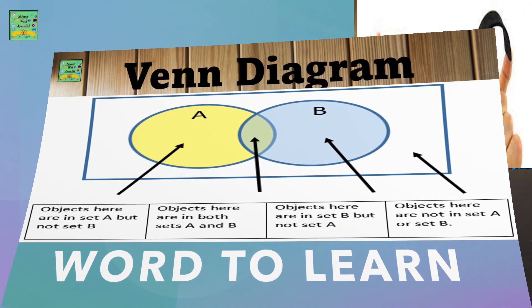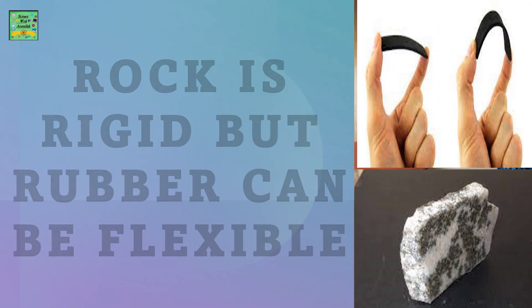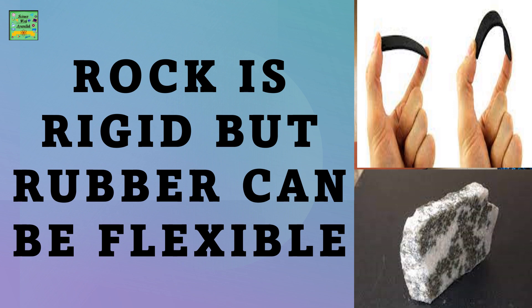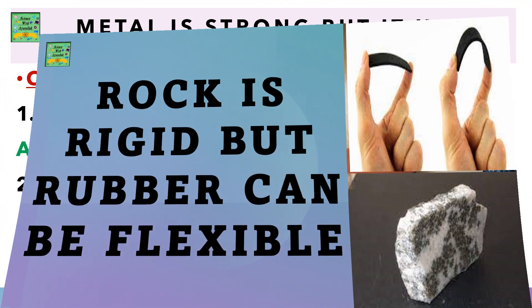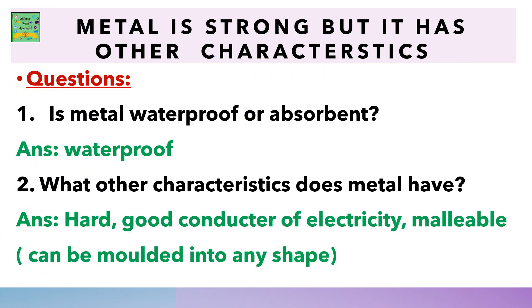Is metal waterproof or absorbent? Answer: waterproof. What other characteristics does metal have? Answer: hard, good conductor of electricity, malleable, i.e. can be moulded into any shape.